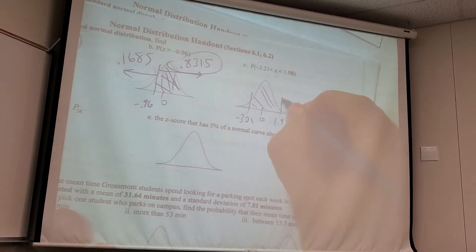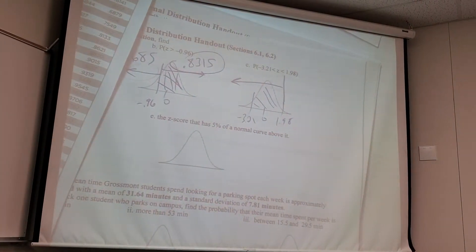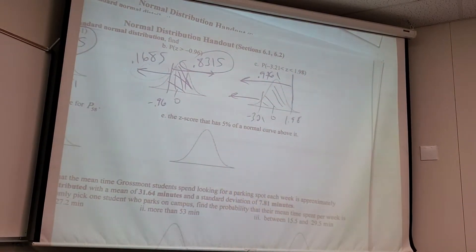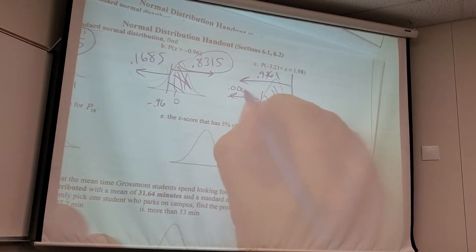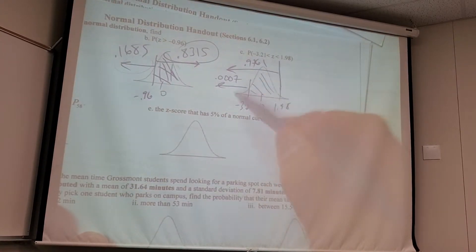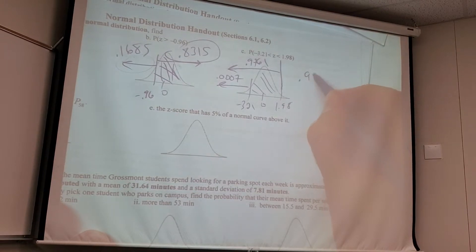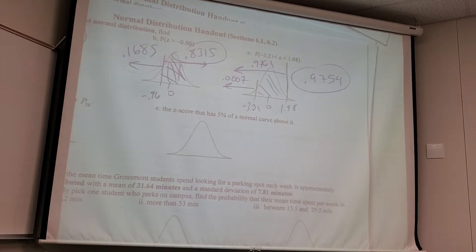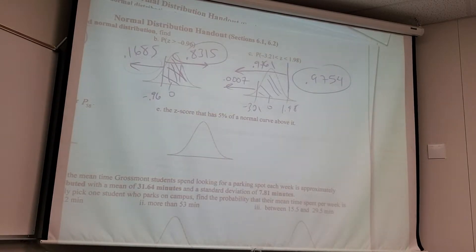You look up areas and then subtract those. That makes physical sense. The area below this and the area below that, if I subtract them, I get the area that answers the question. It does make physical sense. So what do you get when you look up 1.98? 0.9761, I like it. And negative 3.21? Yeah, you get the low cost, 0.0007. So then, what do you do with those? You subtract them. 0.976 minus 0.0007 equals 0.9754. Kick ass.